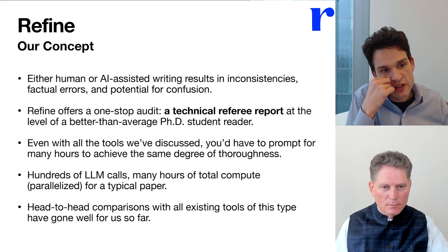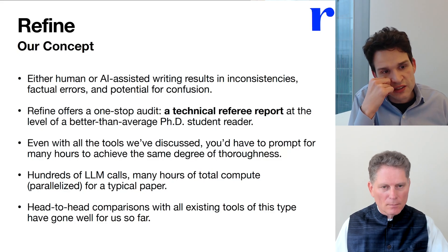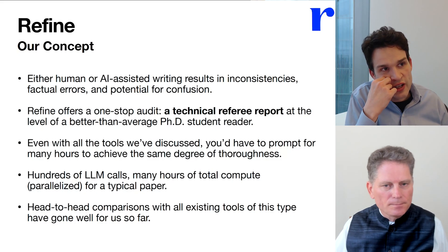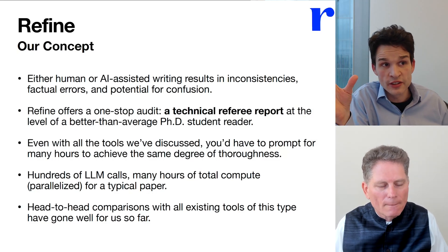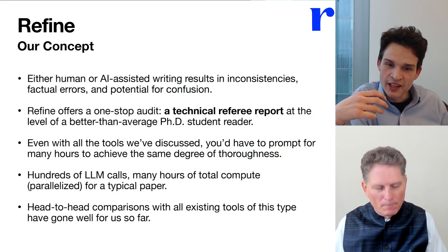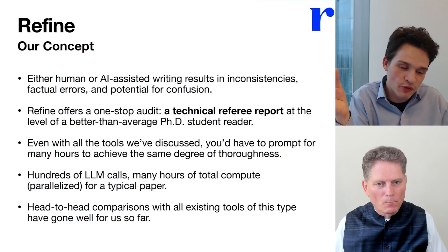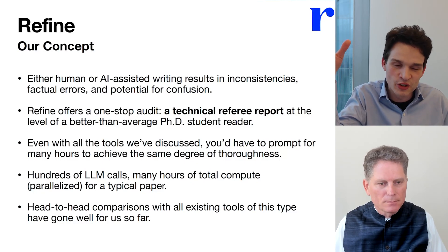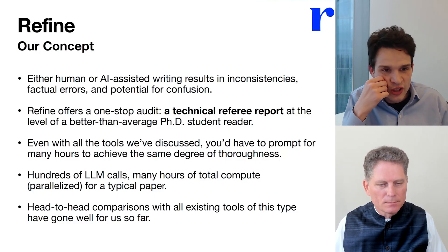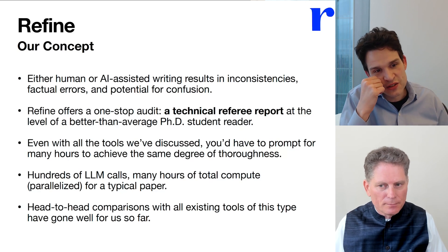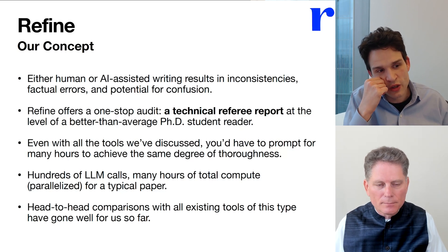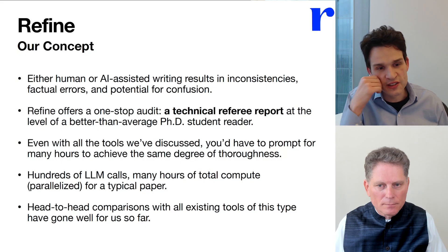That makes quality control more important, because these tools will not guarantee logical consistency. They will often make an assumption for convenience in the middle of a proof that was never stated in the main text. So whether that happened through human behavior or through AI assistance, you want a technical referee report that will make sure the whole thing sticks together.